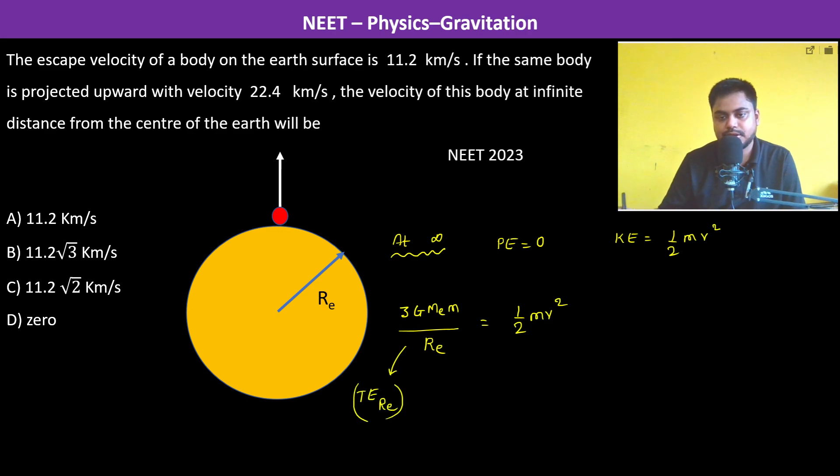is equal to √(2GMₑ/Rₑ) × √3. Now I have segregated it because this √(2GMₑ/Rₑ) is 11.2, so therefore 11.2 km/s × √3.